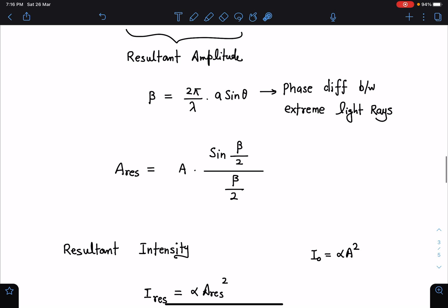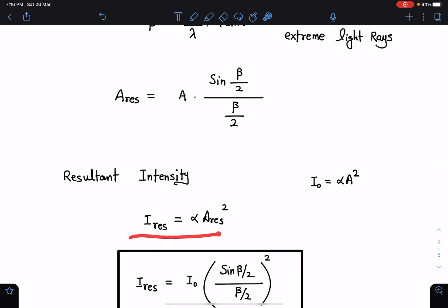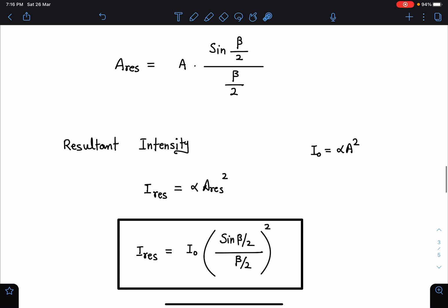You can see here the resultant intensity which is some constant times A square. I resultant also I will be using the same constant times A resultant square. From here I am going to get this resultant intensity as I_0 sin of beta by 2 divided by beta by 2. Corresponding to the central spot I can say theta is 0, theta is 0 means beta is 0. sin beta by 2 divided by beta by 2, once beta is tending to 0 we can take this limit as 1. I_0 is the intensity at the beta just in front of the slit, maximum intensity you can say.